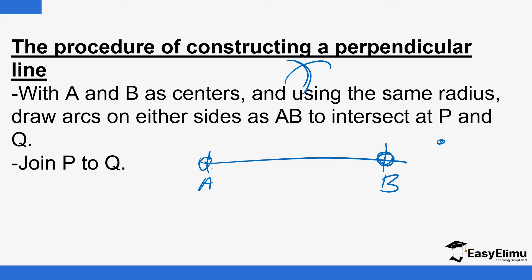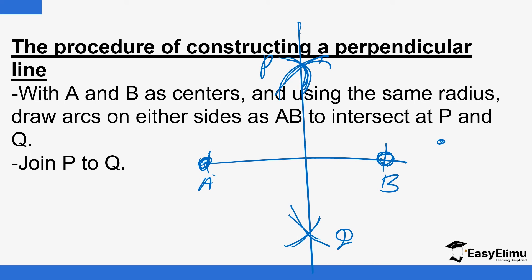As you draw the arcs, you are supposed to draw arcs on both sides. Using A as the center, draw an arc up there and another arc down here. Then, shifting the center from A to B, draw an arc to cut the first arc up there and another arc down here to cut the first one. Label these points P and Q. If you join these two points P and Q, you shall have drawn a perpendicular line.